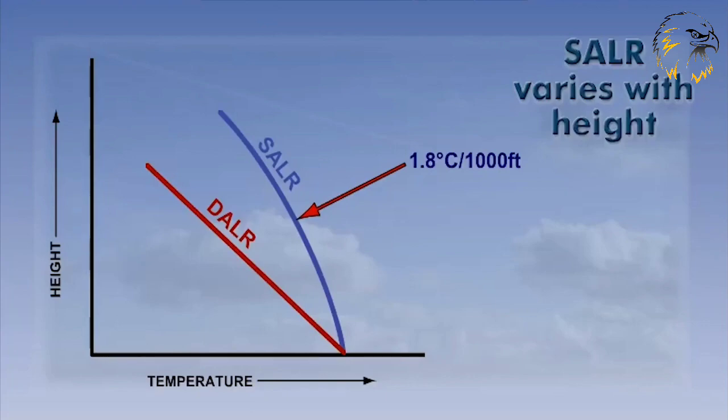However, the actual rate varies from around 1.2 degrees per 1000 feet at 26 degrees, to 2.2 degrees when the temperature is around minus 10 degrees.